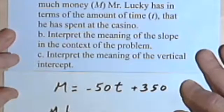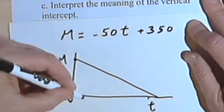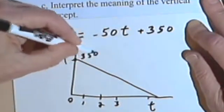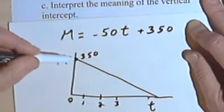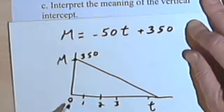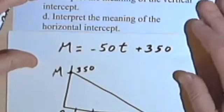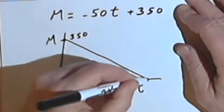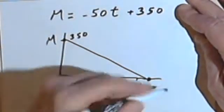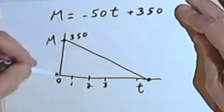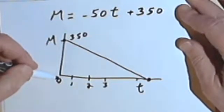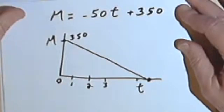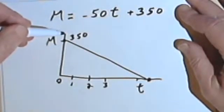Interpret the meaning of the vertical intercept. That vertical intercept occurs when time is zero, and that point is 350 — that's how much money he started with. The vertical intercept tells you how much money you start with when the independent variable is zero. Now, interpret the meaning of the horizontal intercept. That intercept is at some number of hours where the dependent variable m equals zero. That means he's run out of money — that's what the horizontal intercept represents.